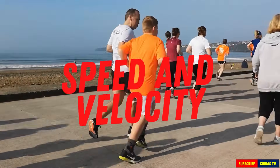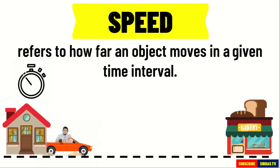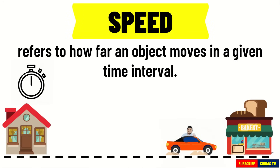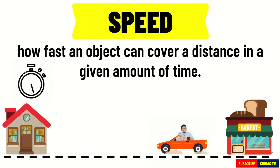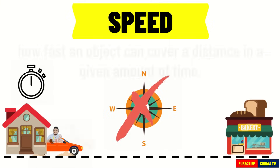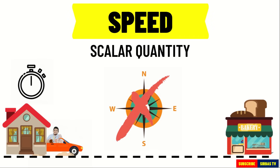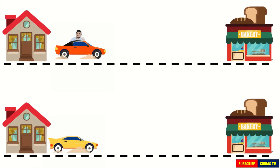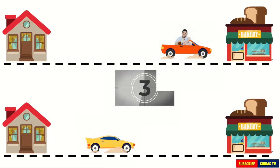Let us first talk about speed. Speed refers to how far an object moves in a given time interval. It gives us an idea how fast an object can cover a distance in a given amount of time. It indicates how fast an object is moving without referring to the direction of motion. Since there is no direction involved, speed is considered a scalar quantity. Observe the speed of the two cars — which do you think will cover a greater distance in 5 seconds?